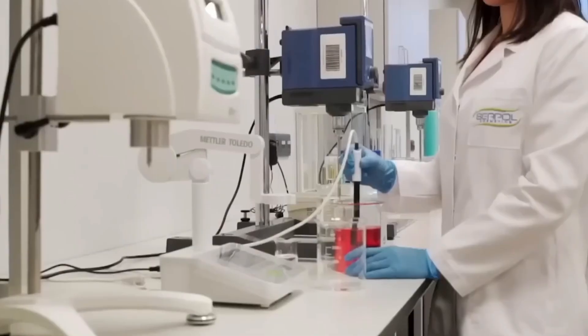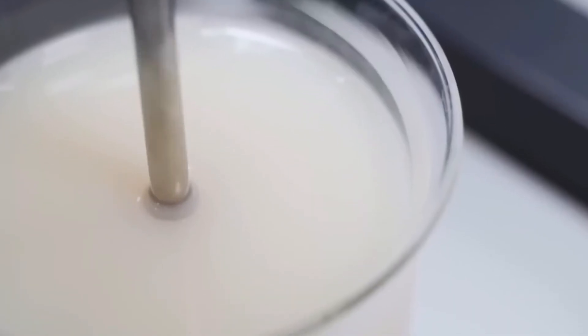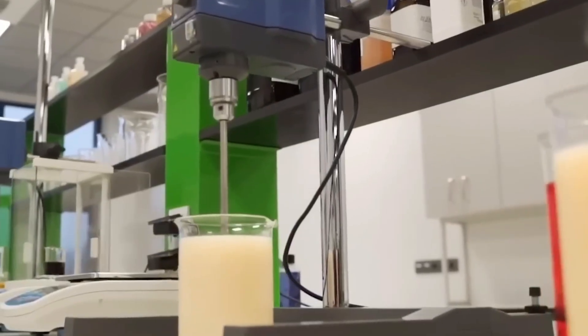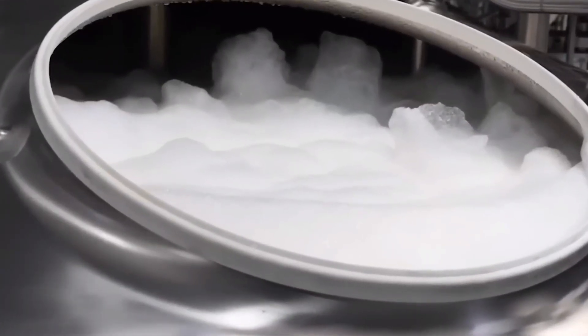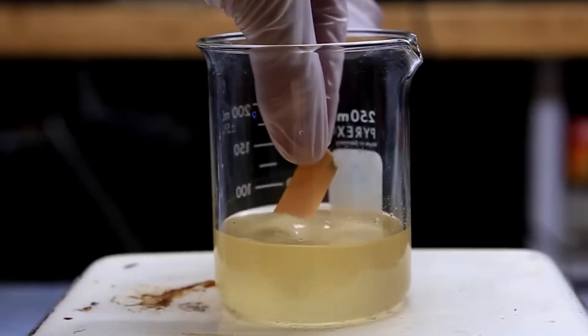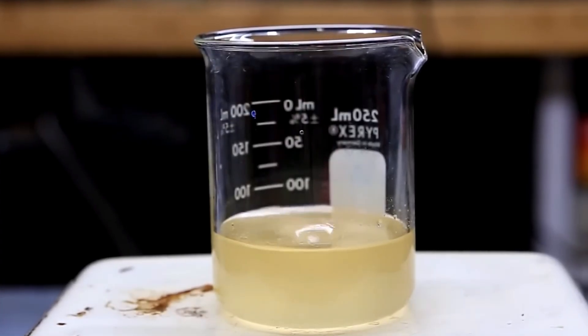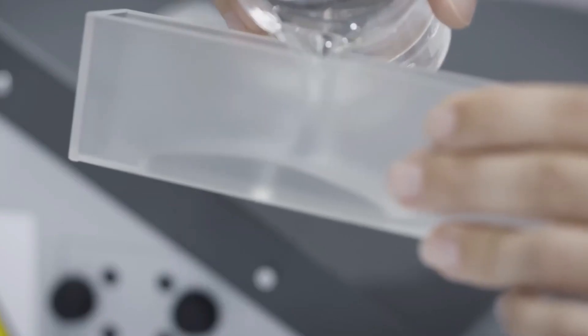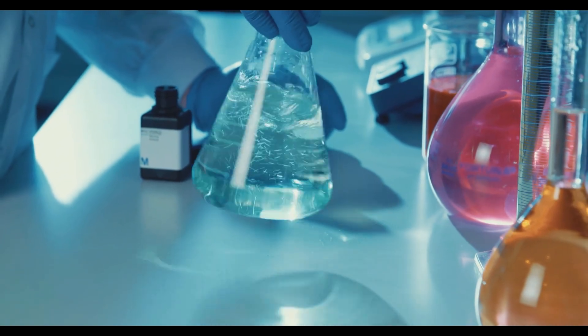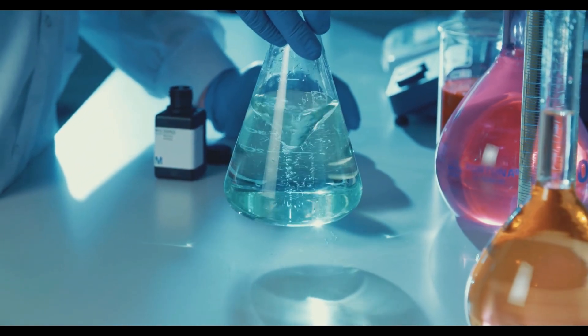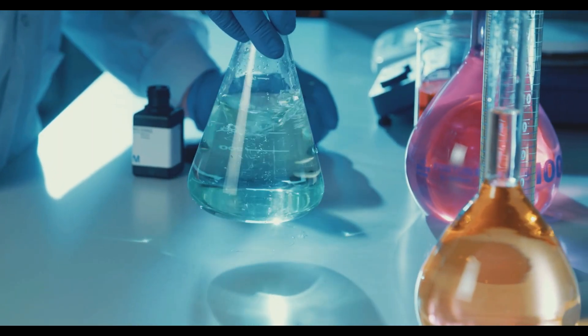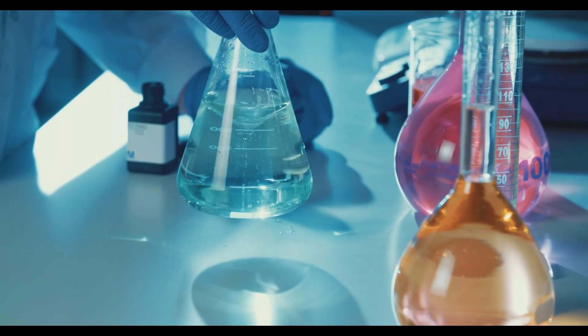Temperature control is crucial. Too hot and the soap scorches. Too cool and the reaction stalls. Most soap makers aim for a range between 100 and 150 degrees Celsius. During saponification, the mixture's pH constantly changes. That's a measure of how acidic or alkaline it is. Soap makers test the pH at various stages, looking for the sweet spot where all the oils have reacted with the alkali. If the pH is too high, the soap can be harsh on skin. Too low, and it won't clean properly.